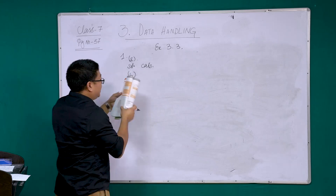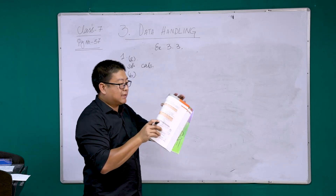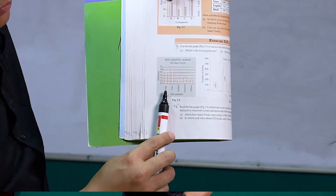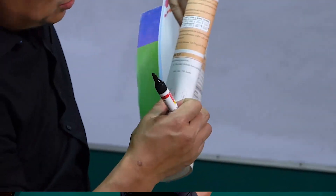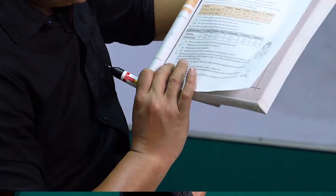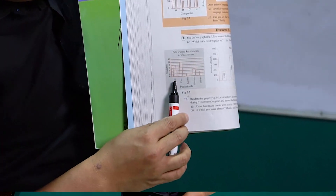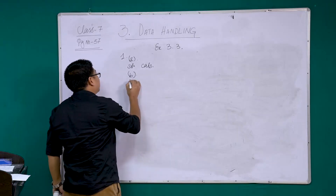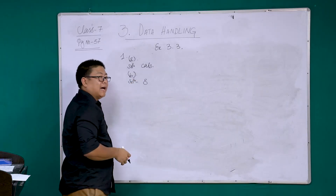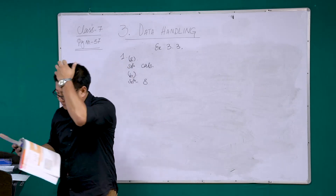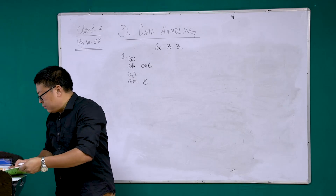B) How many students have dog as a pet? Looking at the bar graph for dogs, the bar goes up to 8. That means 8 students have a dog as a pet. This is all about the bar graph for this session.